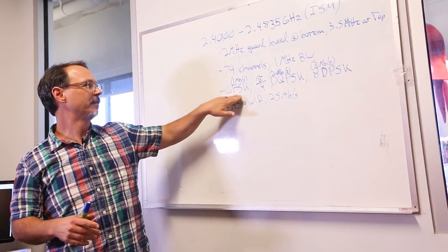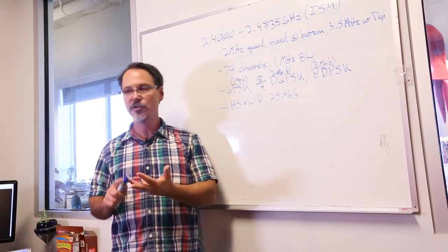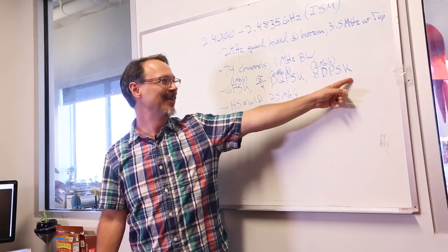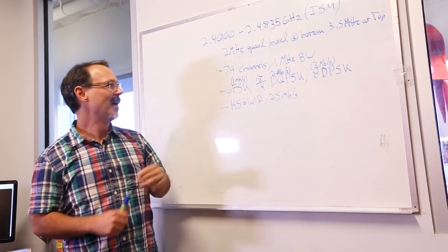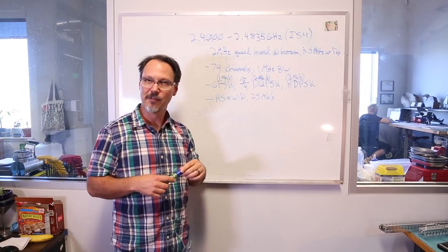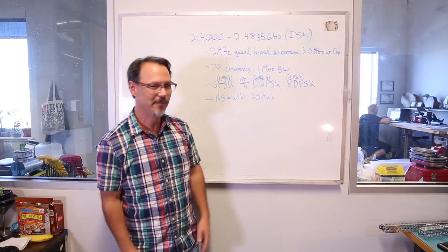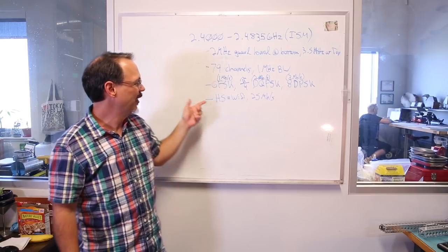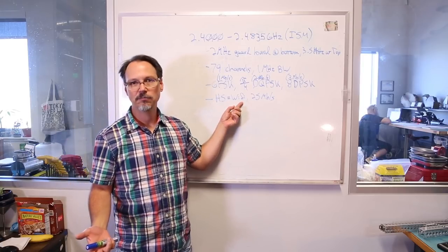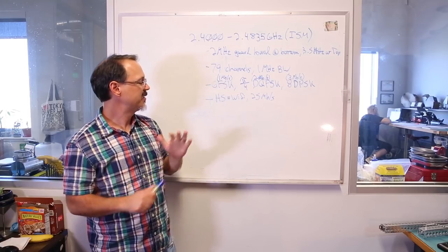The modulation schemes used are Gaussian frequency shift keying. It gets you 1 Mbps. PI over 4 DQPSK. DQPSK stands for differential quadrature phase shift keying. That gets you up to 2 Mbps. And, 8 DPSK, which is differential phase shift keying, gets you to 3 Mbps. I am not going to spend any time talking about these modulation schemes. Check them out on Wikipedia or your other favorite modulation reference on the internet, if you want more information. And, there's also HS, which we talked about very briefly. And, of course, HS stands for high speed. And, that is effectively Wi-Fi. It's a 2.4 GHz radio. And, that will get you up to 25 Mbps.